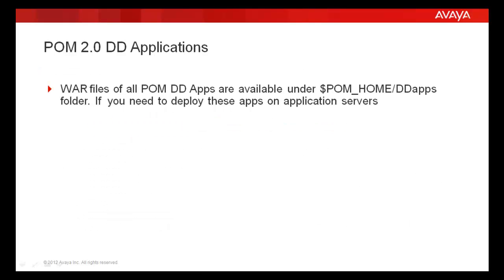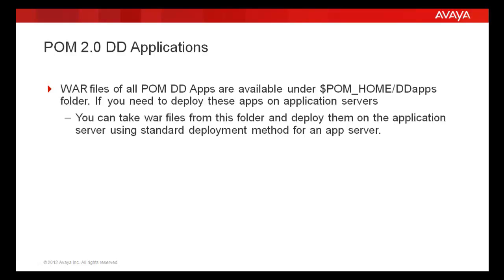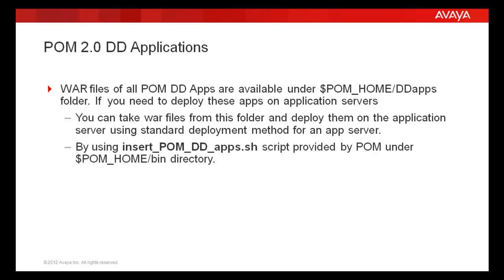All these applications are delivered in a VOR format. These VOR files are available under $POM_home/DD_apps folder. If you need to deploy any of these applications on the application server, one way is to take these VOR files from this folder and deploy them using the standard deployment method for an app server. Another way is by using the insert_pomddapps.sh script provided by POM under $POM/bin directory, which we will be covering in this demonstration.